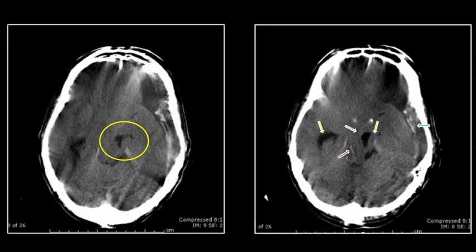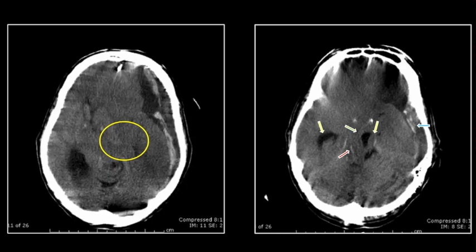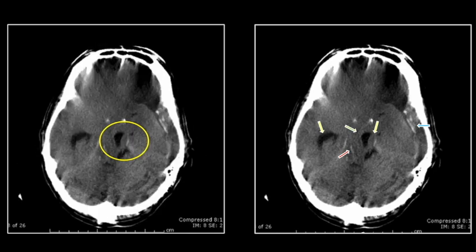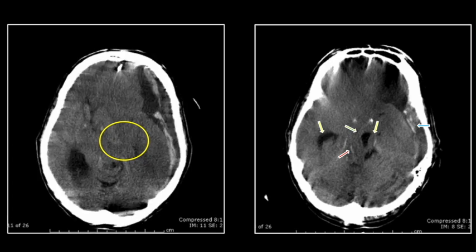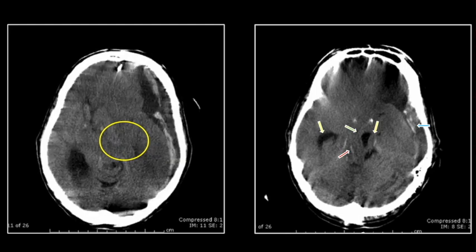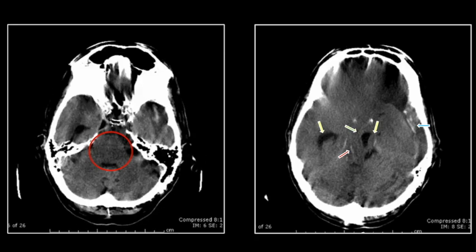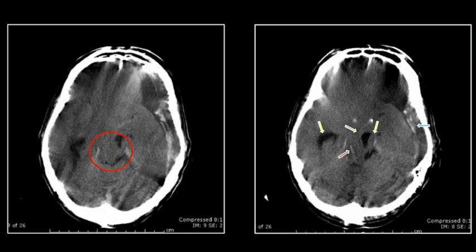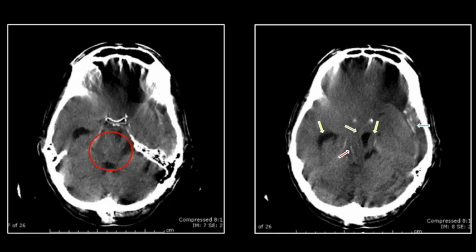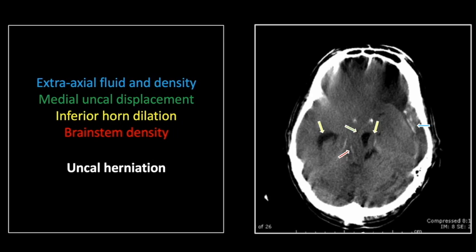Let's look first at the uncal herniation and trapped horn — note that pinched, narrowed portion of the inferior horn and dilation just at its tip within the herniated portion of the uncus. Then, let's look at the hypodense brainstem with its central Duret hemorrhage. That is a case of subdural hemorrhage with associated uncal herniation, trapped horn, and Duret hemorrhage of the brainstem.